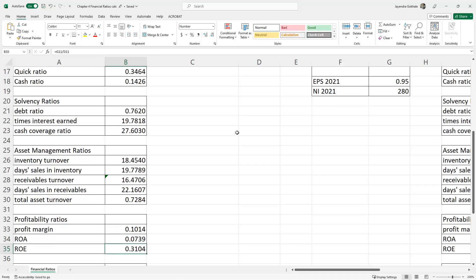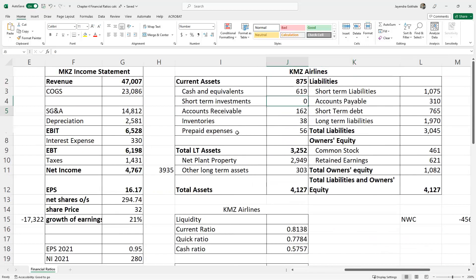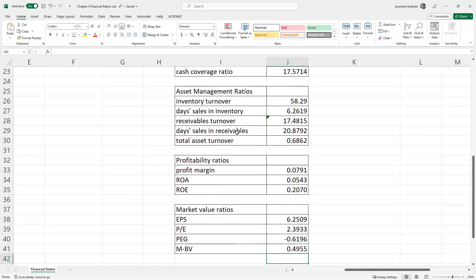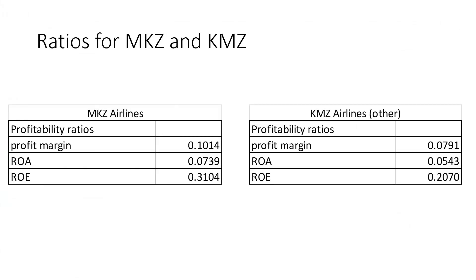KMZ airlines, the smaller airline, is not as profitable as MKZ airlines. In summary, profit margin, return on assets, and return on equity are all larger for MKZ — the larger airline. This suggests that the airline sector may depend on larger scale to be more profitable, which could be one outcome of this analysis.